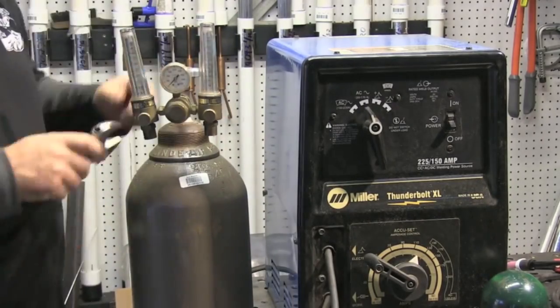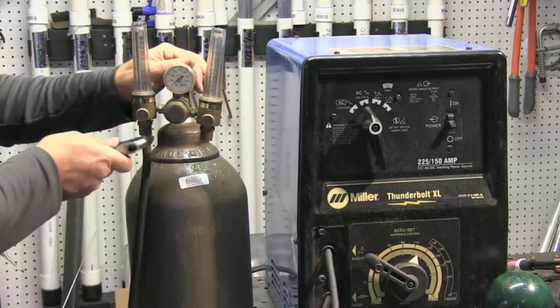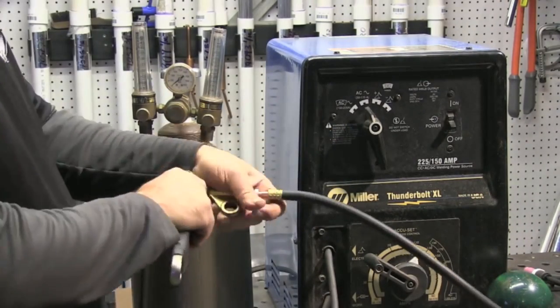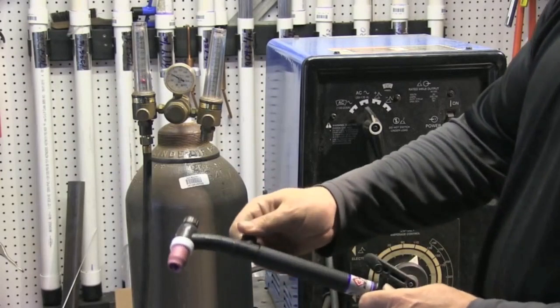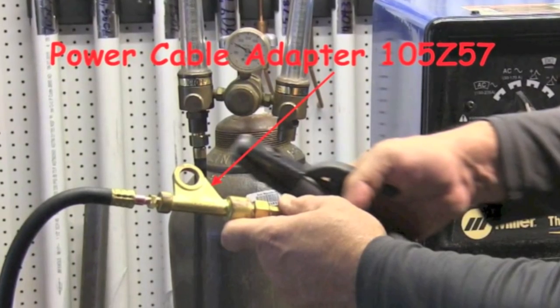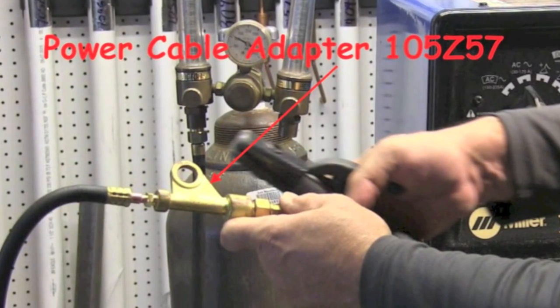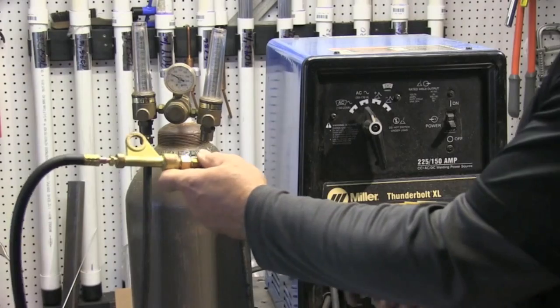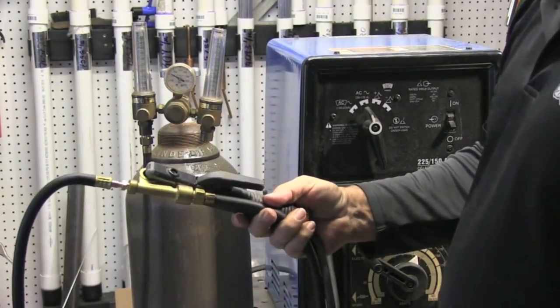The benefit of having an AC DC stick welder is that you can also do scratch start TIG with it. All you need is an argon bottle, a flow meter regulator, and this little adapter to hook up a TIG torch. It's a power cable adapter, part number 105-Z57. Look it up on Google or Amazon, you'll find it pretty easily.